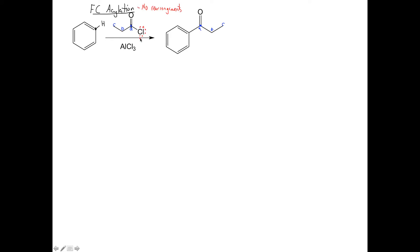So let's draw our lone pairs on our chlorine because that's going to be the first step. This chlorine is going to attack the Lewis acid aluminum. Aluminum has three bonds, so it does not have a full octet as a Lewis acid.